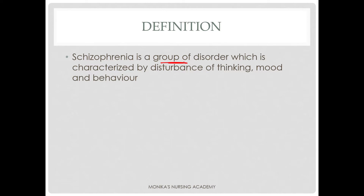Next we will discuss the definition. Schizophrenia is a group of disorders which is characterized by disturbance of thinking, mood, and behavior. In schizophrenia, disturbances of thinking, mood, and behavior are seen.